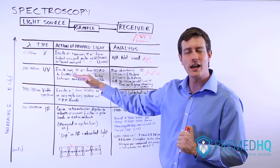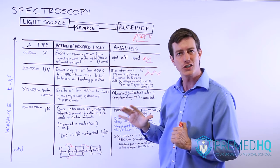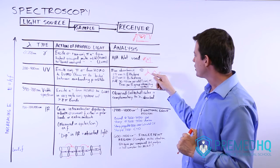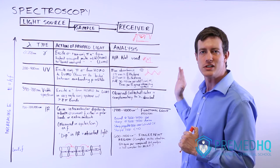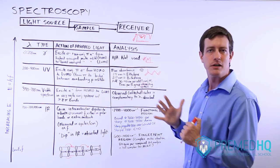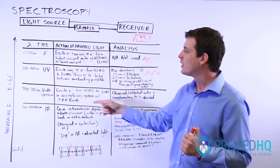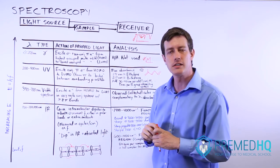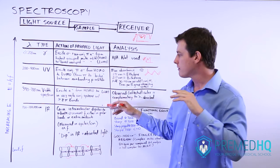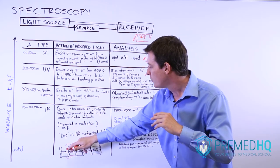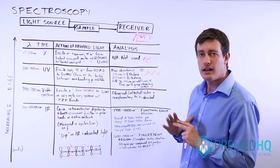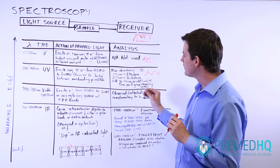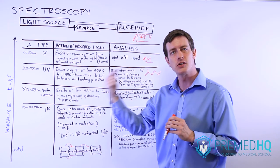Ultraviolet light can excite electrons in very small conjugated systems. As the system gets bigger, you add 30 or 40 nanometers for each additional conjugated pi bond. Once your system is large enough — as with beta-carotene — visible light, which is lower energy than ultraviolet, is now capable of bumping one of those electrons from a pi bond to its lowest unoccupied orbital. In the visible range you can plot a spectroscopy graph, or observe colors with your eyes, because the color being absorbed is opposite to the color that reaches your eyes.